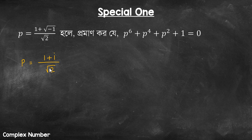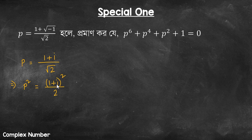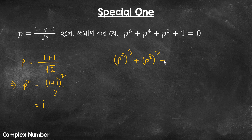Do you want to see the form of i? I will show you: equals (1 plus i) whole square divided by 2. Do you see the form of i? So 1 plus i whole squared — this value is twice i, so expand. p squared is the value of i. p to the power 6 is (p squared) cubed. p to the power 4 is (p squared) squared. p squared is the value of i. That means i cube plus i squared plus i plus 1.